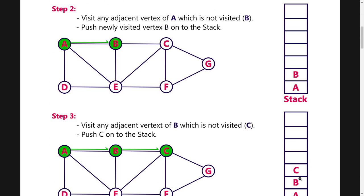Step 2, visit any of the adjacent node of the vertex A. Again I am taking the alphabetical order, so I am going for B which is not visited and at the same time we are pushing B into the stack.